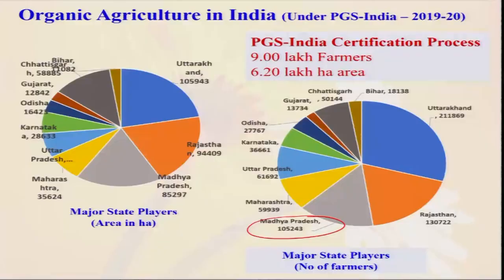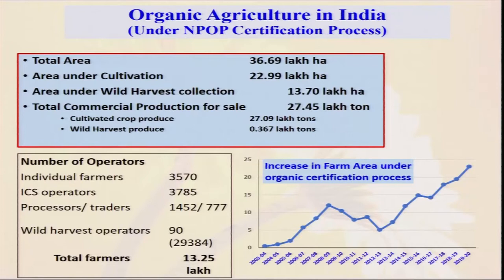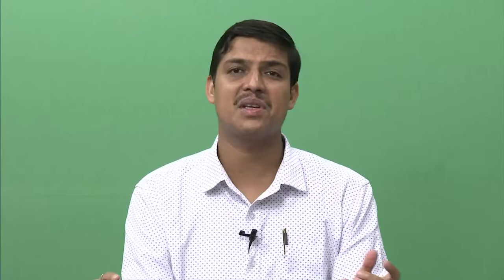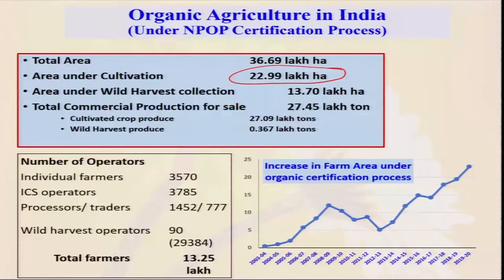In the PGS certification process we have 9 lakh farmers and 6 lakh hectares of area. For certified organic production, the area under cultivation is 22.99 lakh hectares. Apart from that, wild harvest produce — for example, honey collected in the Sundarban area where there is no human intervention in the production cycle — can also be promoted as organic. Our total organic production is 27.4 lakh tons. There is a very good near future for India — there is too much scope to enhance organic farming area, production, and export value.